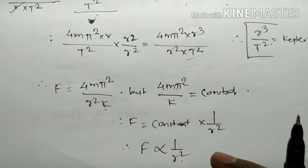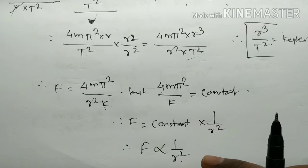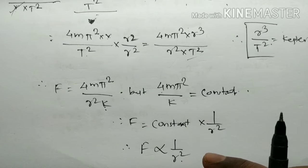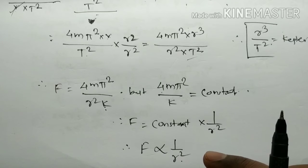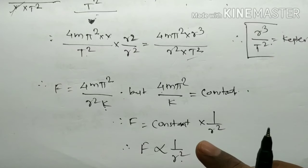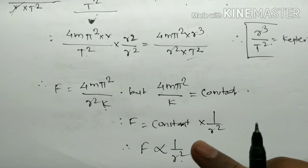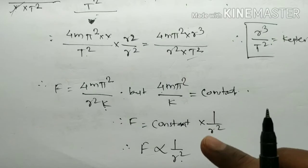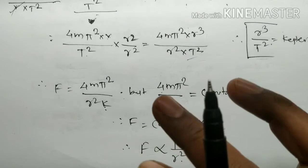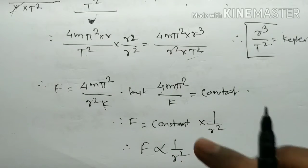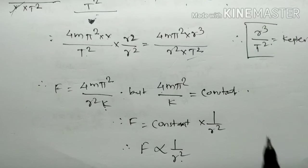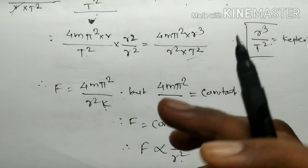The gravitational force controls the universe and decides its future. This is possible because of the huge masses of the planets and stars.